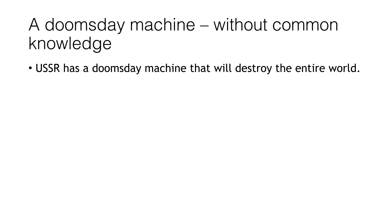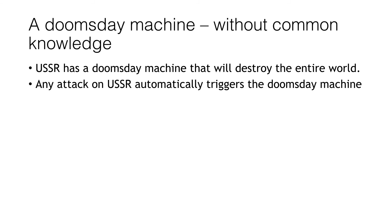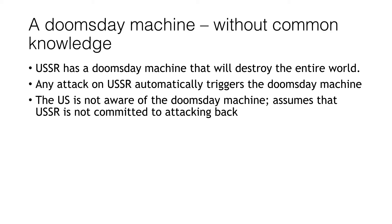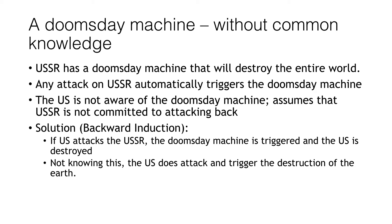Now let's change it: suppose USSR has a doomsday machine but after an attack, USSR decides whether to trigger it — this is common knowledge. What happens? Suppose there is an attack and then USSR thinks, well, if I destroy the entire world, I'm going to die too. So they wouldn't use the machine. Knowing this, the U.S. attacks. This shows the power of commitment. Now consider the information aspect: suppose USSR has a doomsday machine that automatically triggers on any attack, but the U.S. is not aware of it and assumes USSR is not committed to attacking back. If U.S. attacks, the doomsday machine is triggered and the U.S. is destroyed — but the U.S. doesn't know that. They figure they can attack without retaliation, so they attack and trigger the destruction of the Earth. This happened because of the lack of common knowledge. So the main lesson is: if you actually construct a doomsday machine, make sure that everybody knows it.